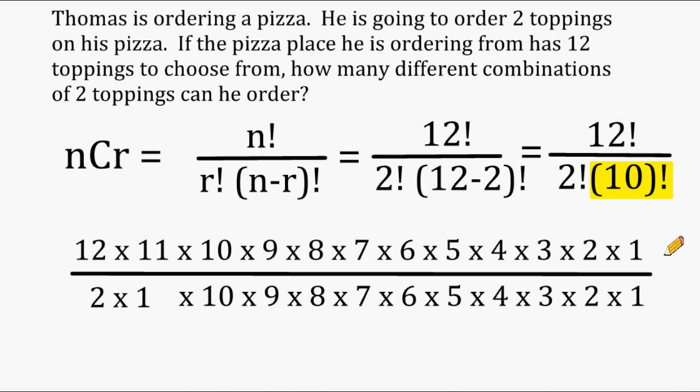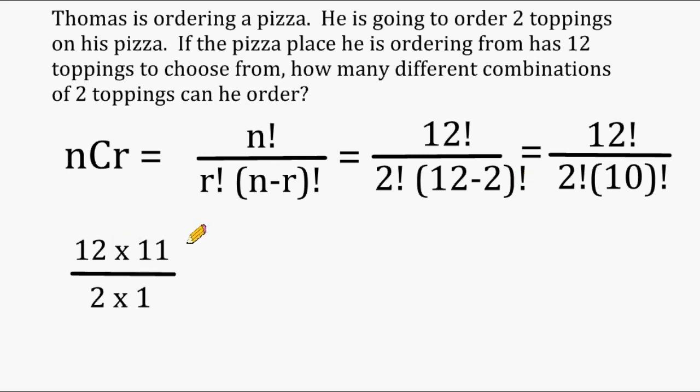Now, the next thing we are going to do is perform any cancellation that we have here. And we have a bunch of numbers here that we can divide by themselves. And remember, anything that is divided by itself equals 1. So we can actually cancel everything starting from 10 all the way back to the number 1.